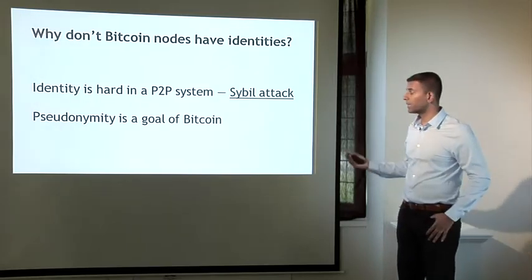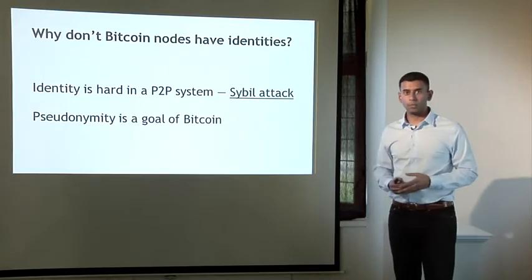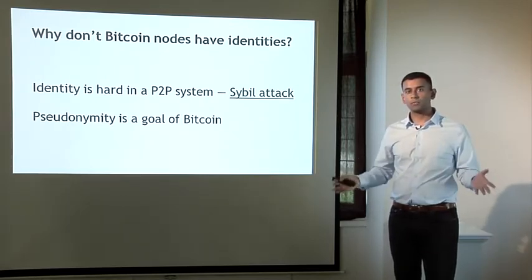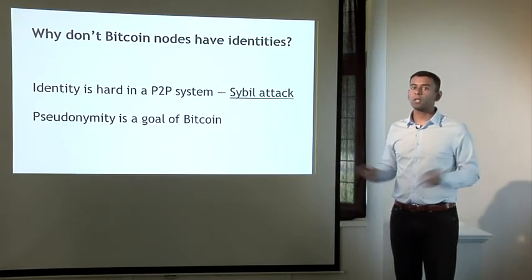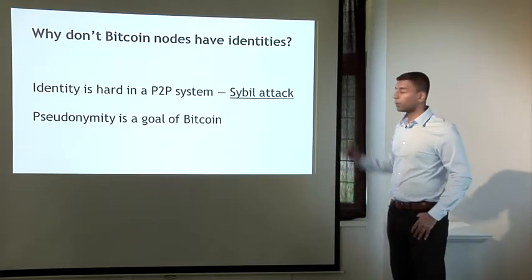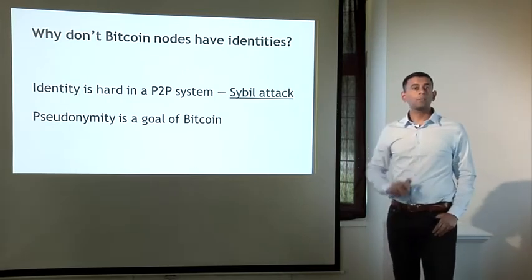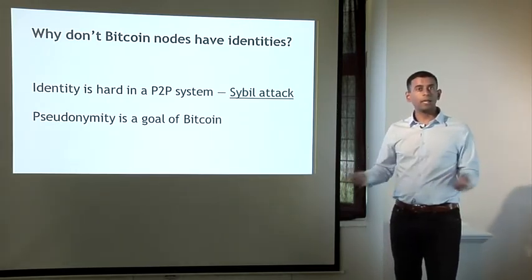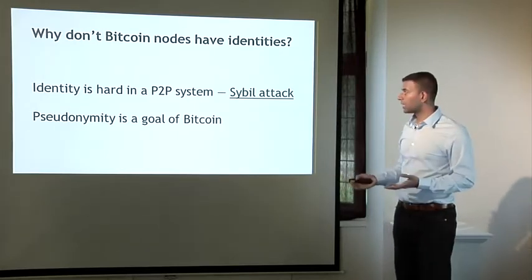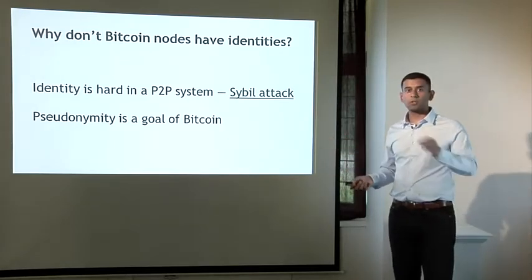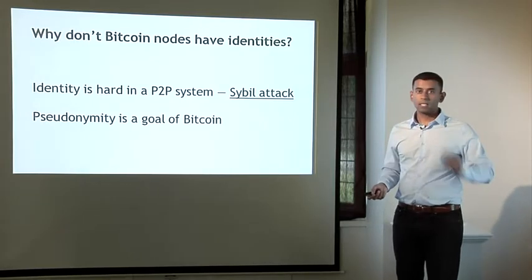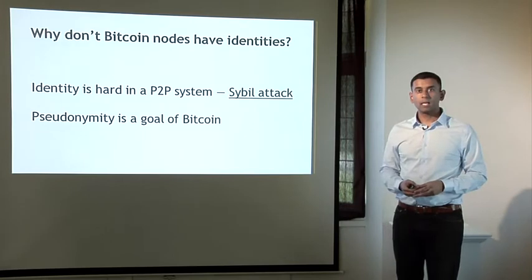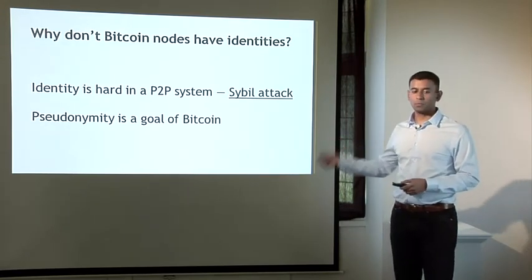The other reason is that pseudonymity is inherently a goal of Bitcoin. Even if it were possible or easy to establish identities for all nodes or all participants, we wouldn't necessarily want to do that. Bitcoin doesn't give you strong anonymity guarantees out of the box, in that the different transactions that you make can probably be linked together. But at the same time, nobody is forcing you to put your real-life identity — like your name or IP address — in order to participate in the peer-to-peer network and in the blockchain. And that's an important property.